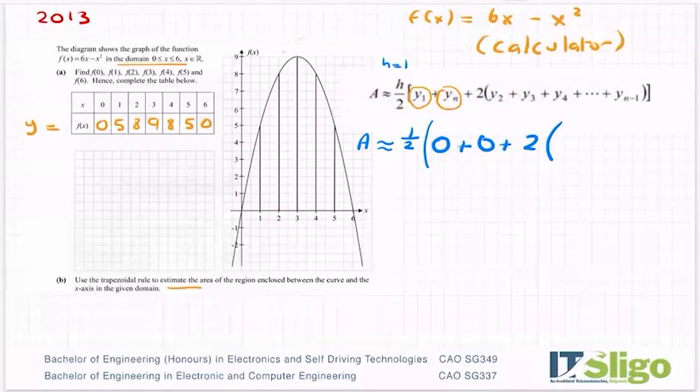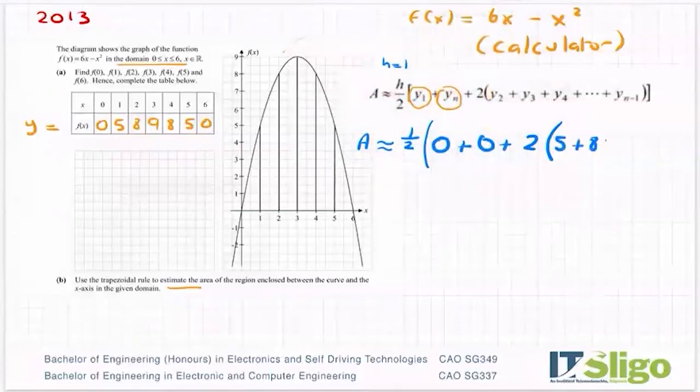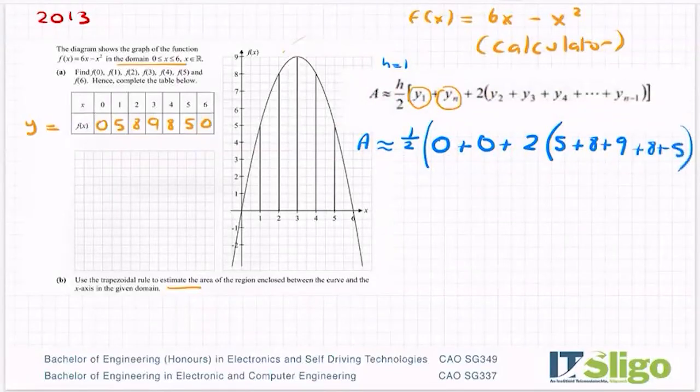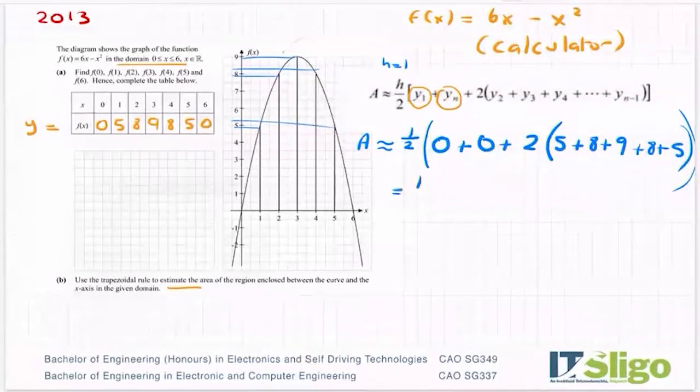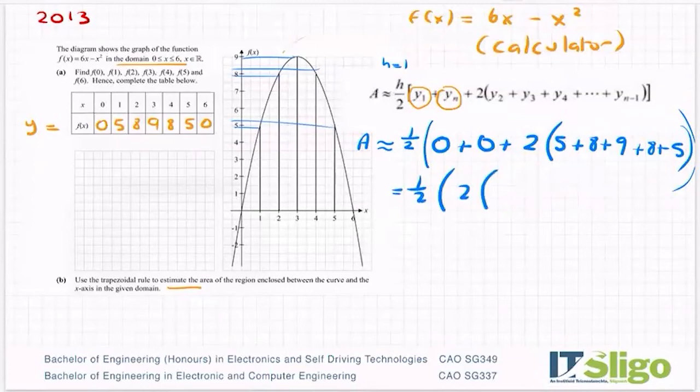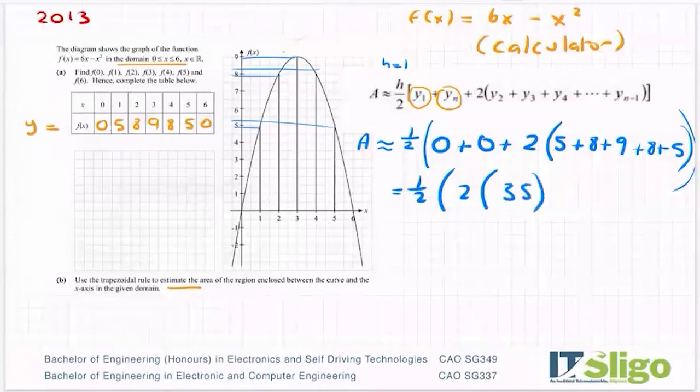So you can obviously read your heights off the graph. Or you can read them from here because you've just written the heights out here. So it's twice the five plus the eight plus the nine plus the eight plus the five. All of these heights that are here. It's twice them. And then you can put that into a calculator if you want all in one go, or you can do it in two halves. So it's a half of five plus eight plus nine plus eight plus five, which is 35. So it's a half of 70. So it's 35 units squared. So area is approximately equal to 35 units squared. And that's the trapezoidal rule.